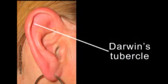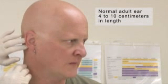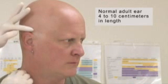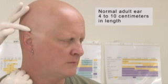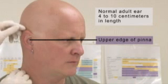The presence of a Darwin's tubercle — a small painless nodule on the edge of the ear — is a normal variation. Note the size of the ear. The normal adult ear is between 4 and 10 centimeters in length, with a smooth outer curve. It sits upright and relatively flat against the head, with the upper edge of the pinna at approximately eye level.